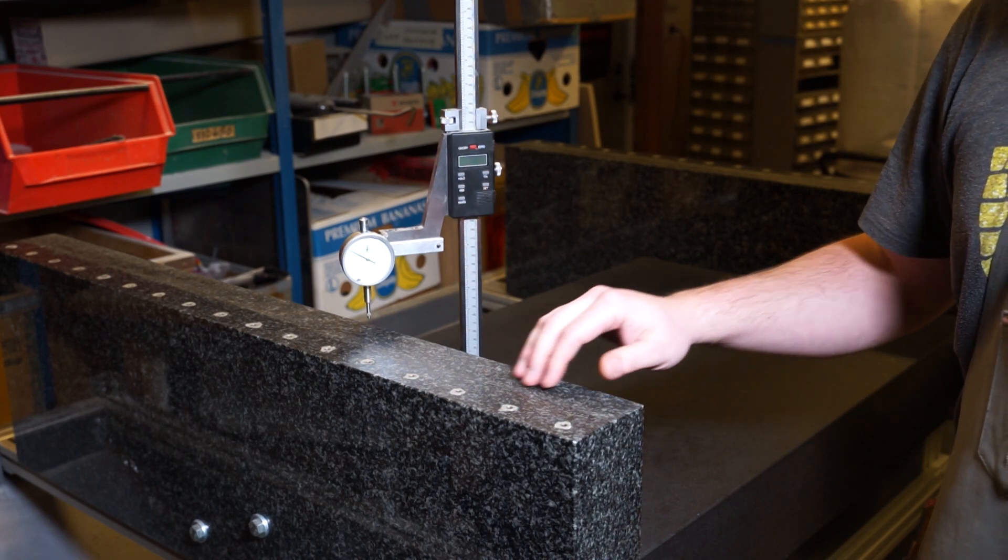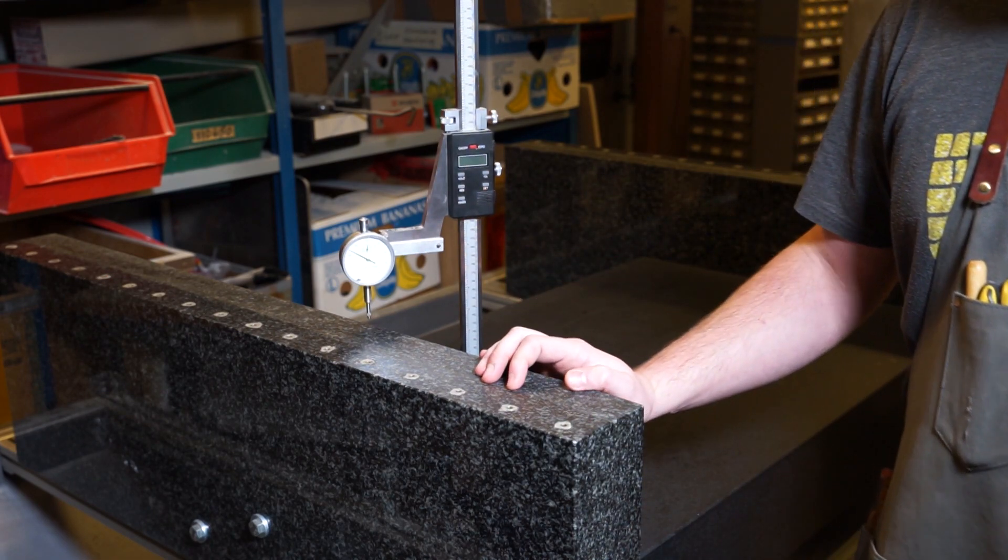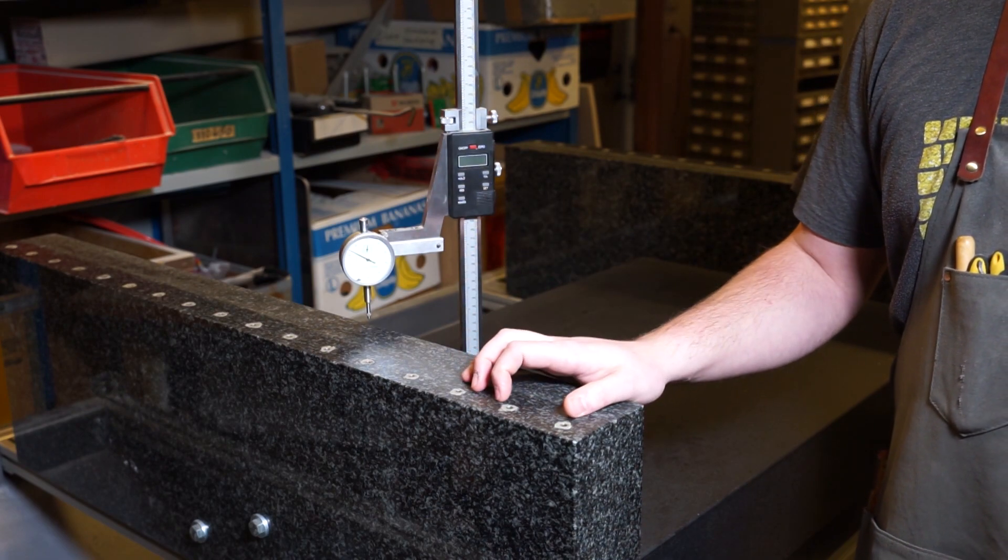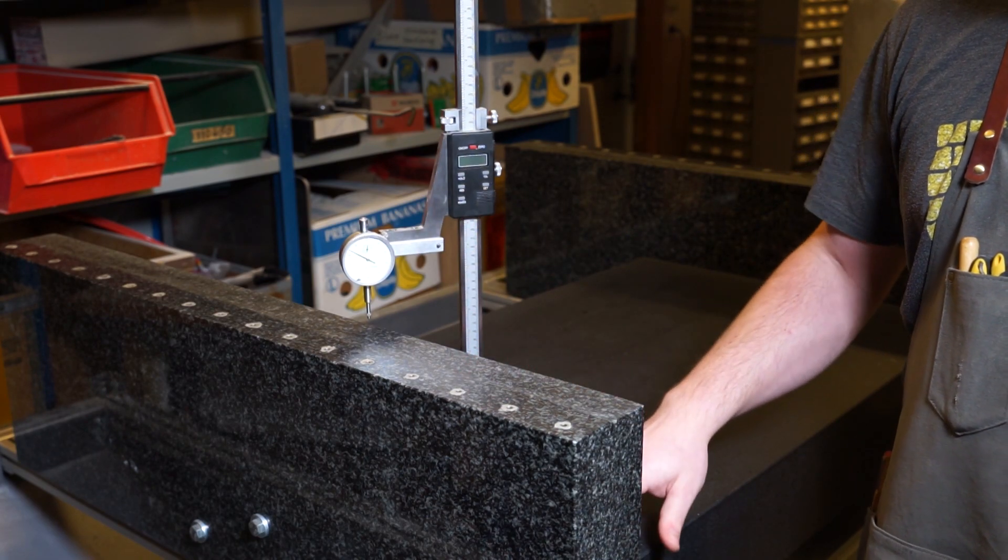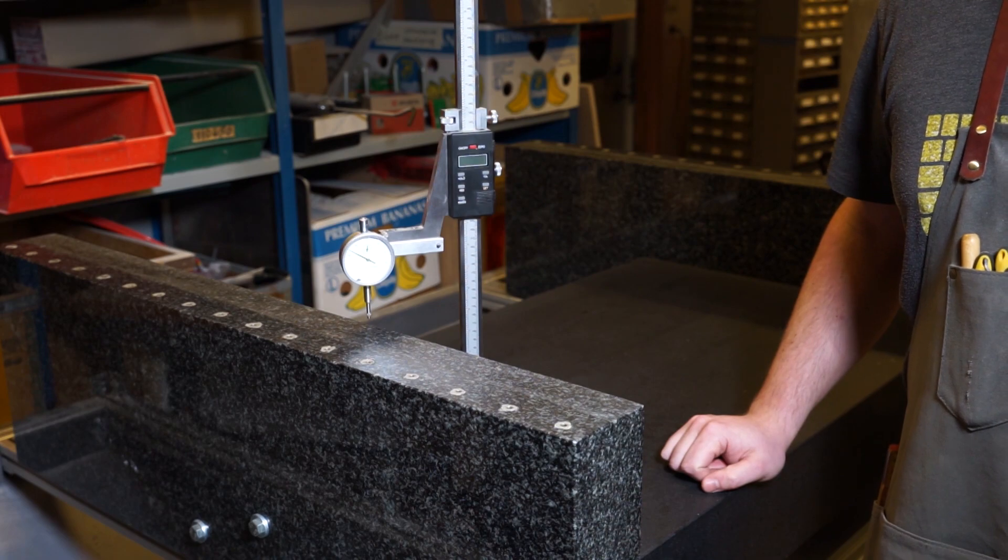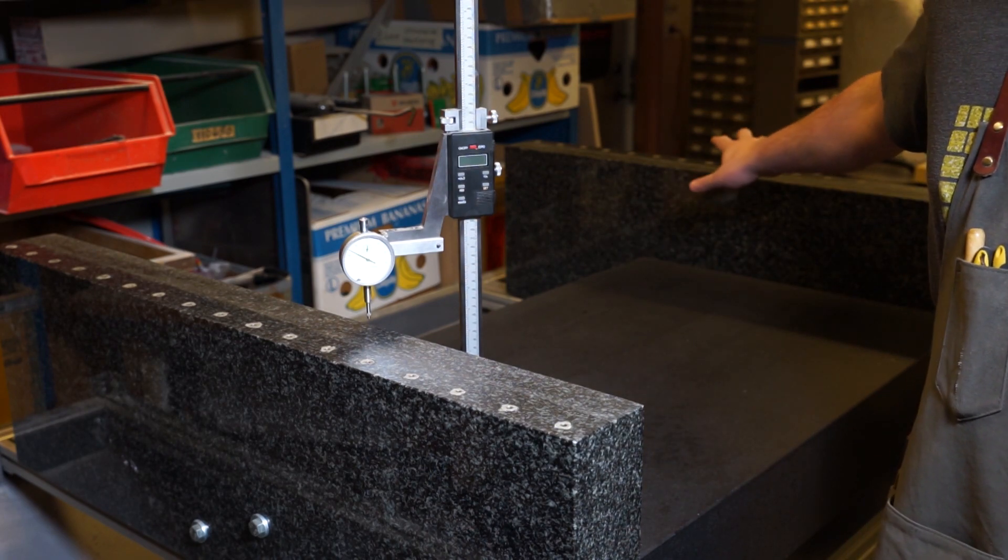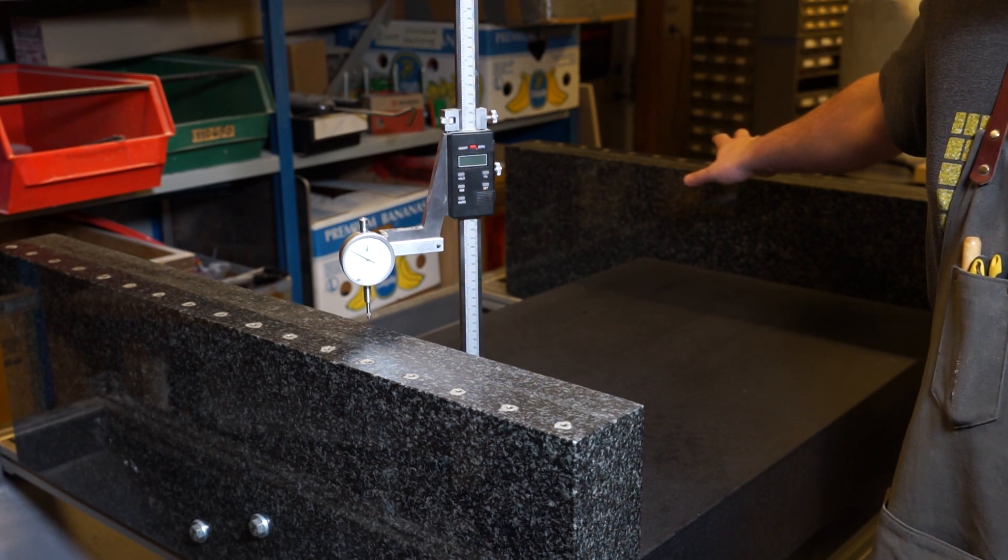I would then shim underneath the lowest part of the side and then take a new measurement and repeat until the measurement was zero. Then I could bolt and glue the side onto the edge of the surface plate and then repeat the same process on the other side.